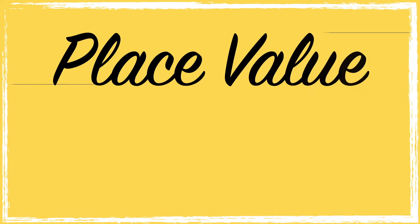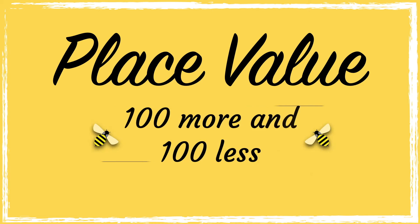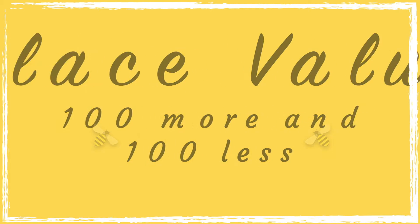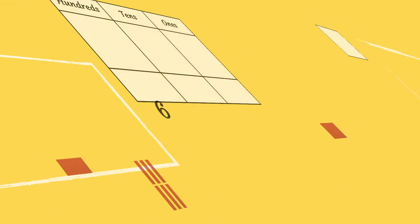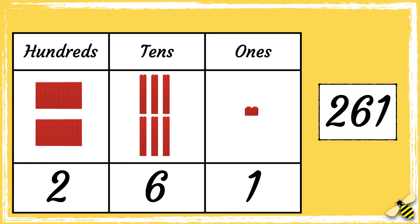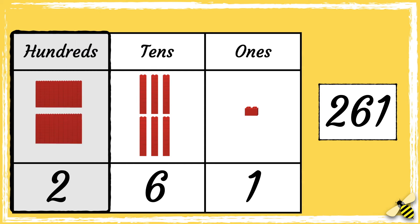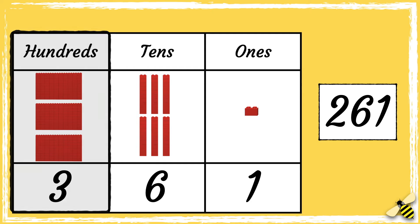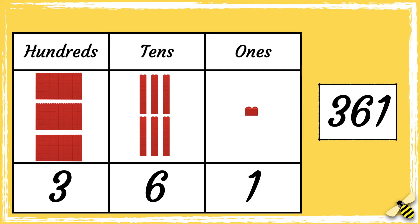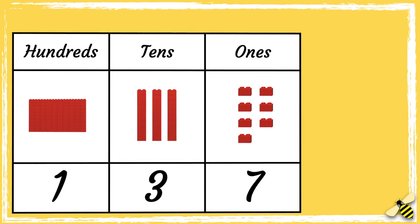In today's video we're going to look at 100 more and 100 less. Here is a place value grid showing the number 261. When we add 100 to a number, we need to look at the hundreds column. So let's add another hundred. Two hundreds become three hundreds, so the new number is 361.